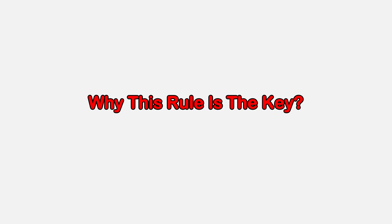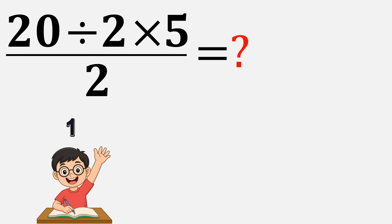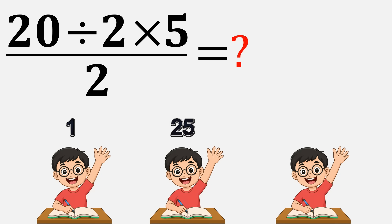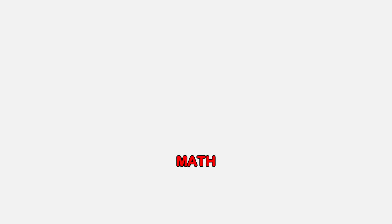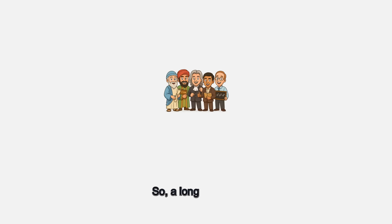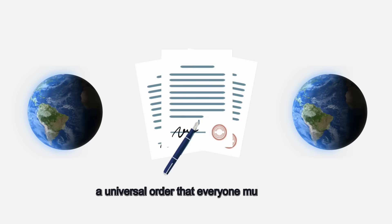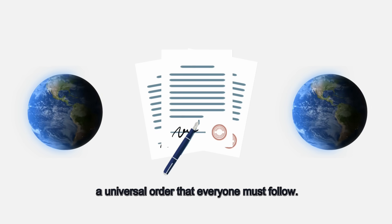Why this rule is the key: Imagine a world where everyone solved the same math problem differently. If one person multiplied first, another divided, and a third went from right to left, math would be total chaos. No one would ever agree on a single correct answer, and simple problems would become unsolvable puzzles. So a long time ago, mathematicians came together and agreed on a single rule, a universal order that everyone must follow.